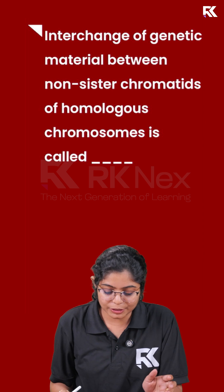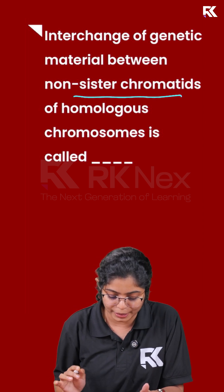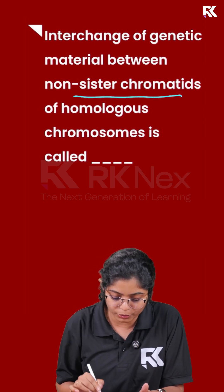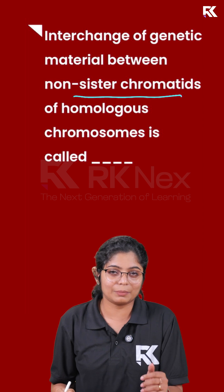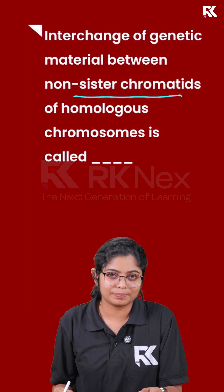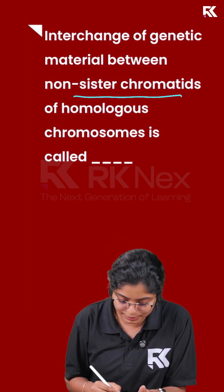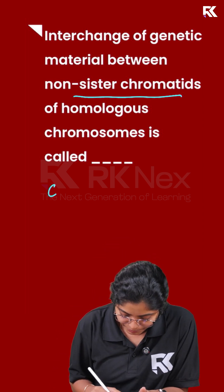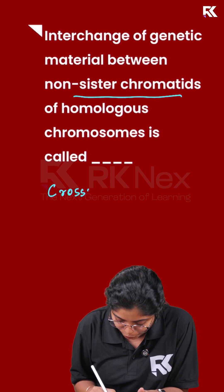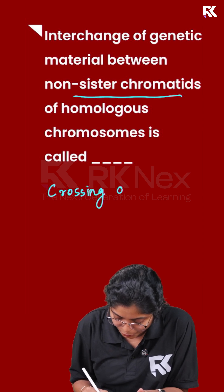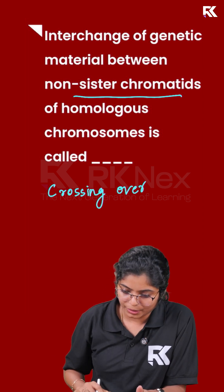The interchange of genetic material between non-sister chromatids of homologous chromosomes is called — what is it called? The simple term is crossing over.